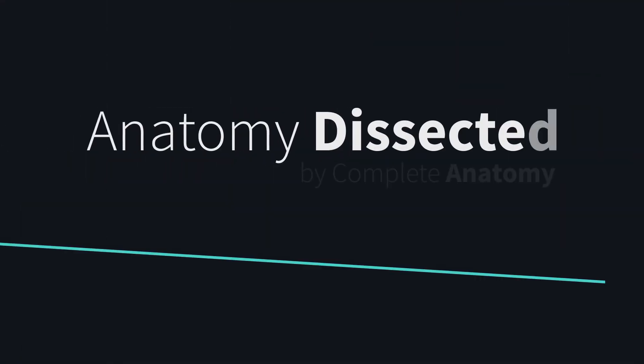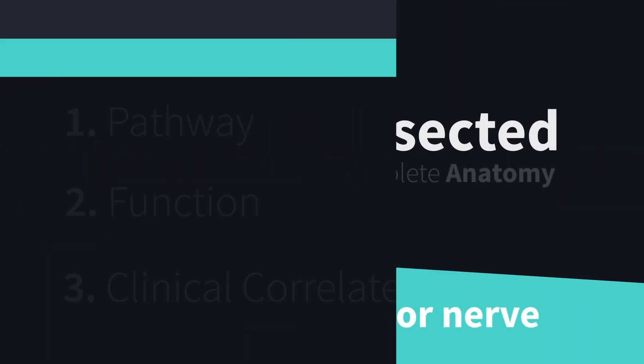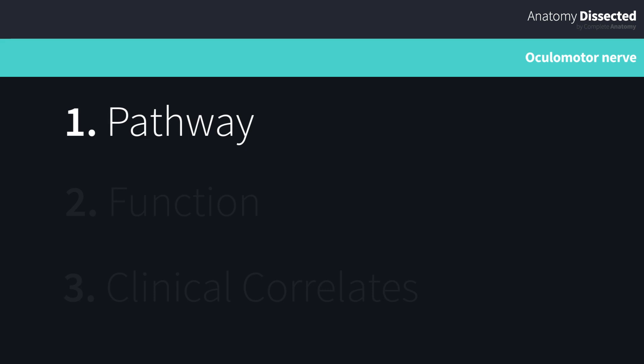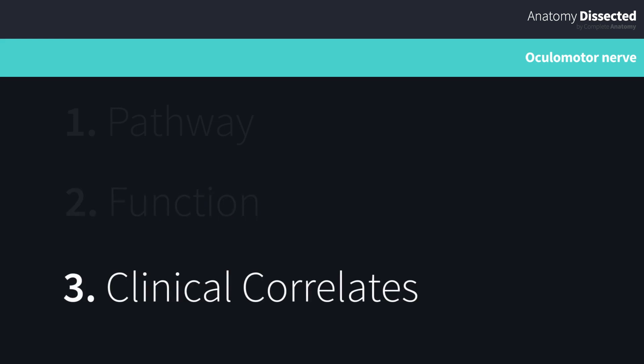Welcome back to our brand new series, Anatomy Dissected by Complete Anatomy. Continuing on with our cranial nerve series, it's now time to take a look at cranial nerve 3, the oculomotor nerve. In this video, we'll first explore the pathway of this nerve, examine the muscles it innervates and their functions, and finish off by looking at some of the clinical correlates.